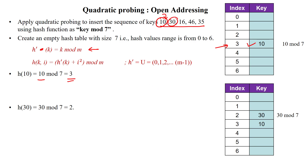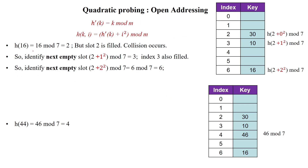Next, inserting 30: 30 mod 7 equals 2. Index 2 is free, so 30 is inserted at index 2. Then inserting 16: 16 mod 7 gives a hash value of 2, but index 2 already has data filled — bucket overflow, collision occurs.